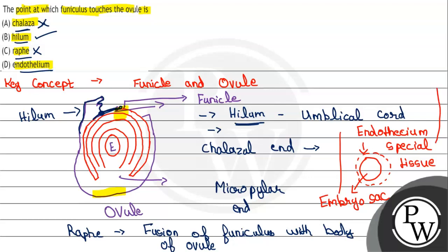These tissues are called endothelium. So, hilum is the correct answer. Raphe is the fusion with the body of the ovule. And the last one, endothelium, is wrong because endothelium is a tissue.